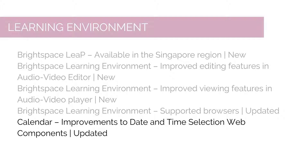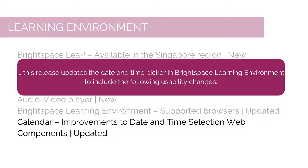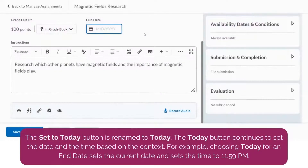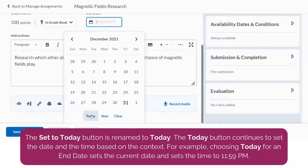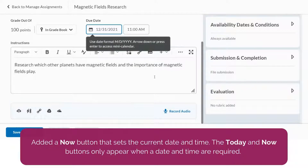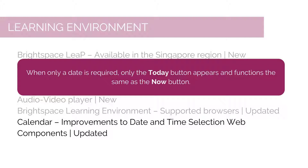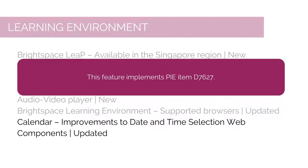Building upon the Calendar Improvements to Date and Time Selection Web Components updated feature released in March 2021 (20.21.3), this release updates the date and time picker to include the following usability changes: the Set to Today button is renamed to Today, which continues to set the date and time based on context. For example, choosing Today for an end date sets the current date and time to 11:59 PM. A Now button has also been added that sets the current date and time. The Today and Now buttons only appear when both a date and time are required. When only a date is required, only the Today button appears. This feature implements PI Item D7627.